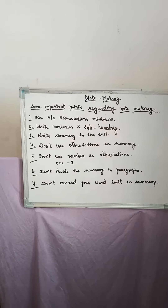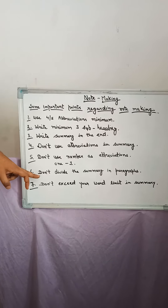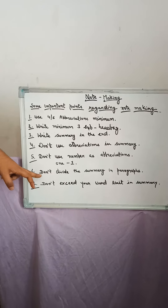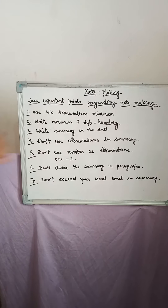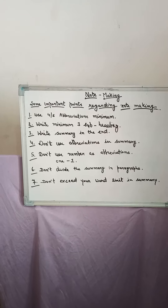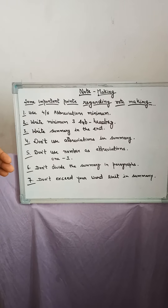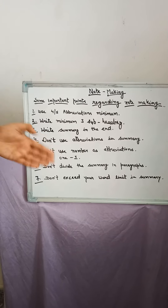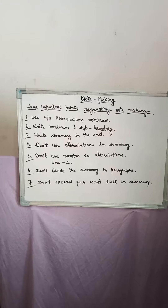Sixth point: don't divide the summary into paragraphs. This point is very important — the summary is written in the usual manner, not in paragraphs. Seventh point: don't exceed your word limit in summary. There is a word limit of 50 to 60 words, so you should follow the word limit of 50 to 60 words. Don't exceed your word limit in summary writing.